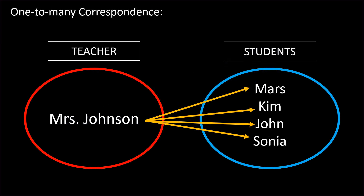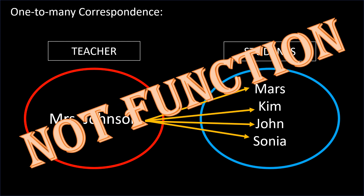But this is a different case. We have one-to-many correspondence: the relationship of a teacher to her four students. Mrs. Johnson has four students: Mars, Kim, John, and Sonia. Mrs. Johnson is the x, while the students are the y's. Therefore, the relation is not a function.